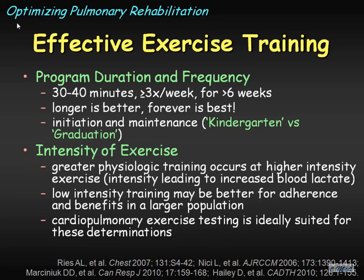The intensity of exercise has lots of literature and debate. Greater physiologic training occurs at higher intensities because it leads to increased blood lactate — there's lots of physiology behind that. However, low intensity training may be better for adherence and benefits in a larger population and is easier to manage. If you have limited resources, a smaller program, or a younger program, it's better to start with low intensity and then build up from there. If you do have a mature program with lots of resources, cardiopulmonary exercise testing can help optimize training intensity. Similar to what Rich Casaburi did in his work published in 2005.